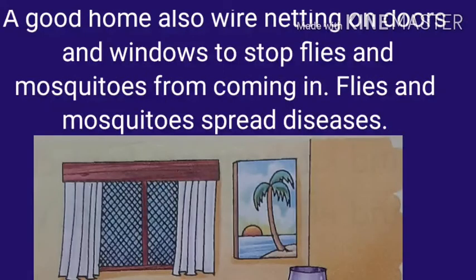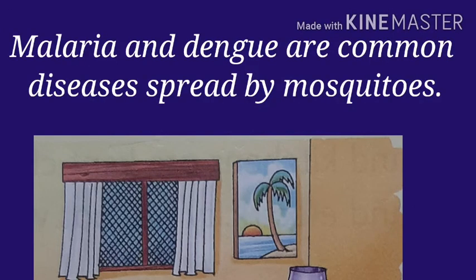A good home also has wire netting on doors and windows to stop flies and mosquitoes from coming in. Flies and mosquitoes spread diseases. Malaria and dengue are common diseases spread by mosquitoes.